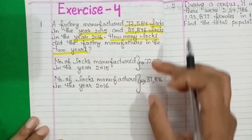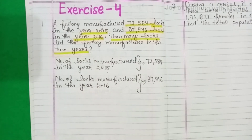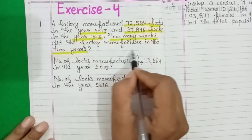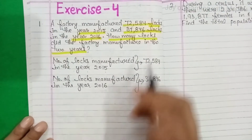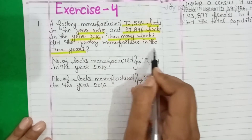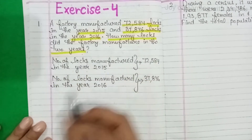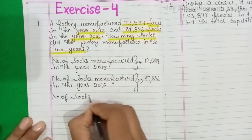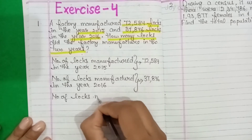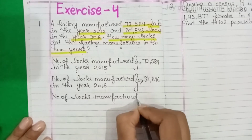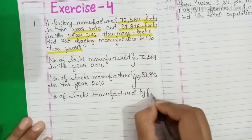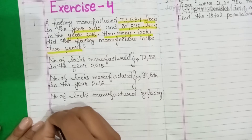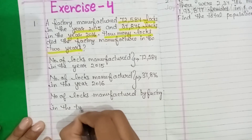So students, we have completed our statements. अब हमें add करना है। But before adding, हमें पता होना चाहिए कि answer में क्या लिखना है। We have to find out the number of locks manufactured by the factory in the two years.